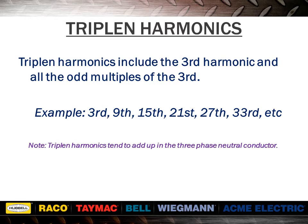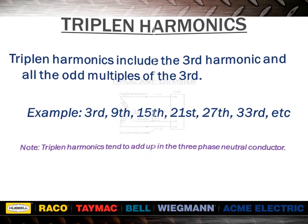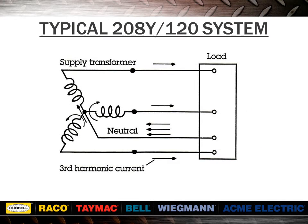It should be noted that triplin harmonics tend to add up in the three-phase neutral conductor. 60 Hz, or fundamental currents, tend to cancel in the three-phase neutral because of the 120-degree phase shift between adjacent phases. Triplin harmonics add up in the three-phase neutral because they are in phase with each other.